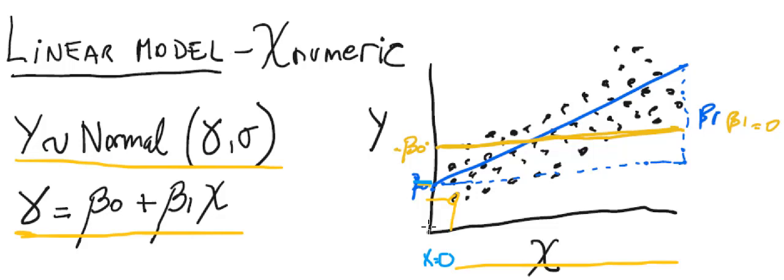Okay, so then beta 1 is going to be the slope. So if this is the line, that's the linear model. Then beta 1 indicates for a unit increase in x, what is the increase in y.